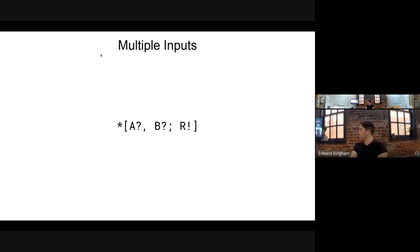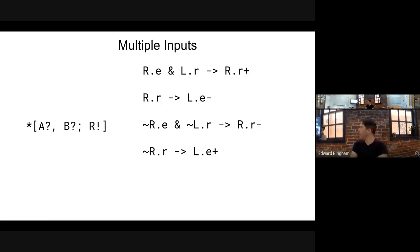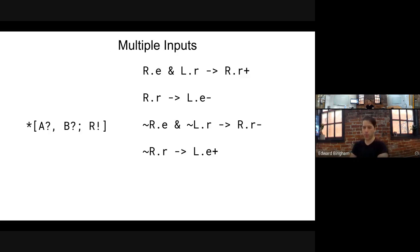Let's start with the first case: we have two input channels A and B, and we want to wait for a request on both A and B in parallel before forwarding that out on the right-hand channel R. We start with our standard weak condition half buffer reshuffling — the normal buffer. We wait for R.E and L.R, raise the output request, then lower the input enable, then hit the reset phase.